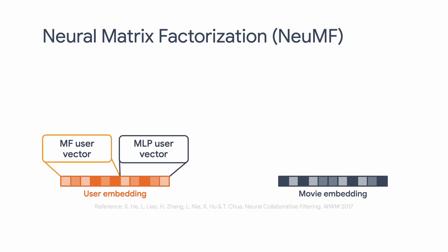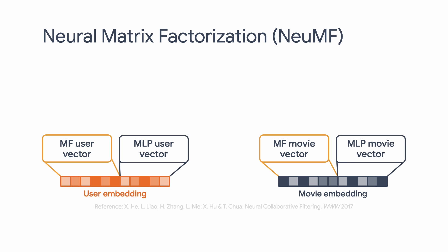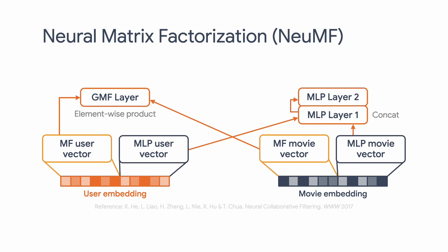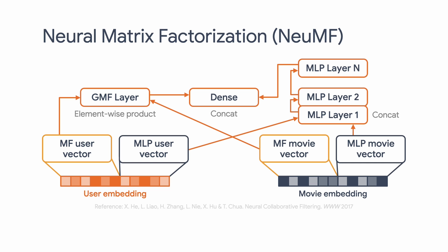From these embeddings, we generate user and movie latent vectors for the matrix factorization and MLP layers separately. After passing through the generalized matrix factorization layer and MLP layer, we concatenate the outputs of these layers and get the predicted logits from a dense layer for computing the loss. That's the whole architecture.